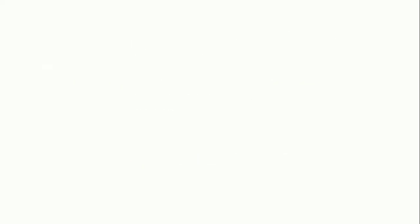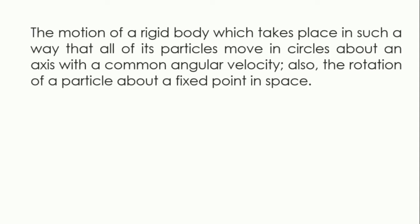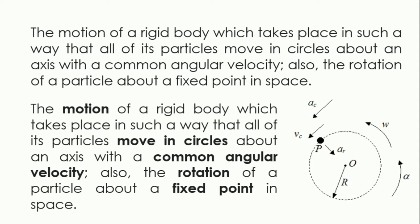Rotational motion and real-life examples. The motion of a rigid body which takes place in such a way that all of its particles move in circles about an axis with a common angular velocity, also the rotation of a particle about a fixed point in space. The body is moving; the particles move in circles — not straight, not curved — about an axis with a common angular velocity. It rotates since it moves in circles, about a fixed point wherein the object rotates in space.